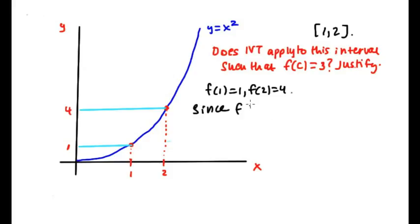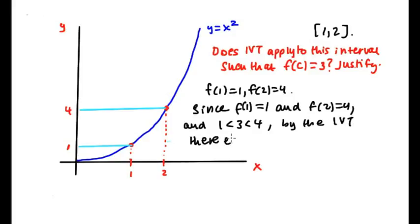Since f of 1 equals 1 and f of 2 equals 4, and 3 is between 1 and 4, by the intermediate value theorem—you can abbreviate it IVT—there exists a c, where a is less than c is less than b, such that f of c is equal to 3. And that is all you need to do for your justification. You can mix it up a bit. I don't have the formal definition memorized. This makes sense and it's a good justification. This would give you full credit on the AP free response.